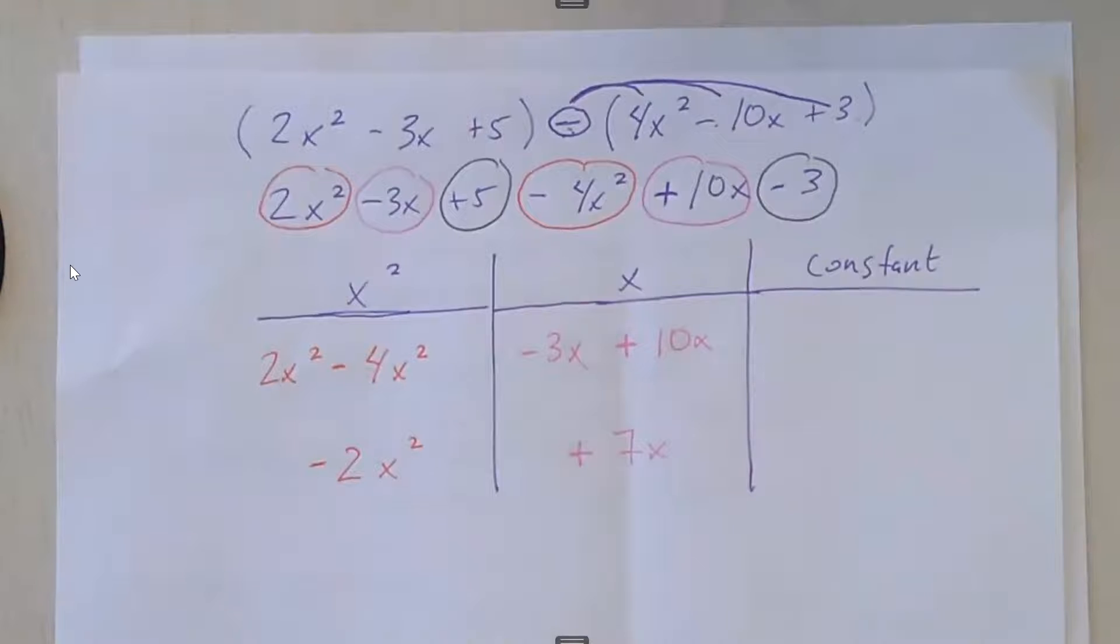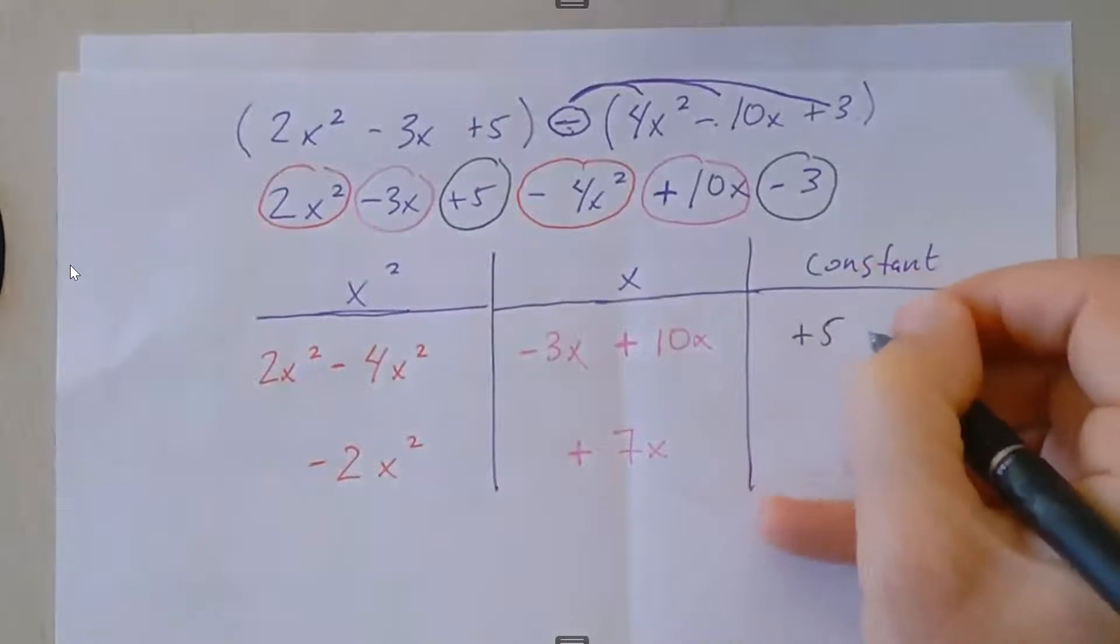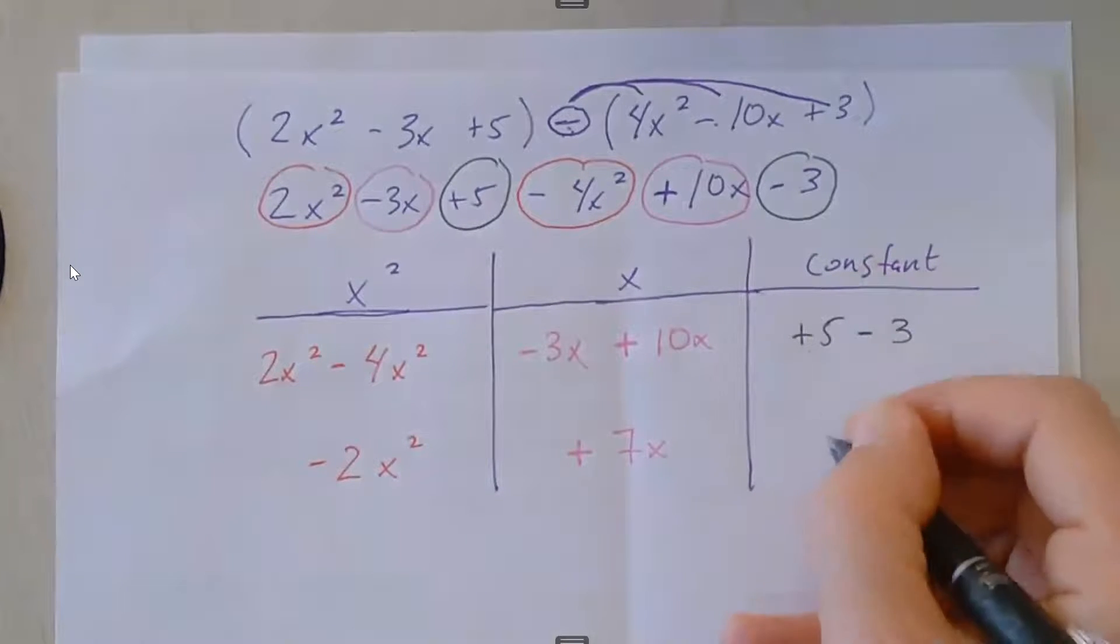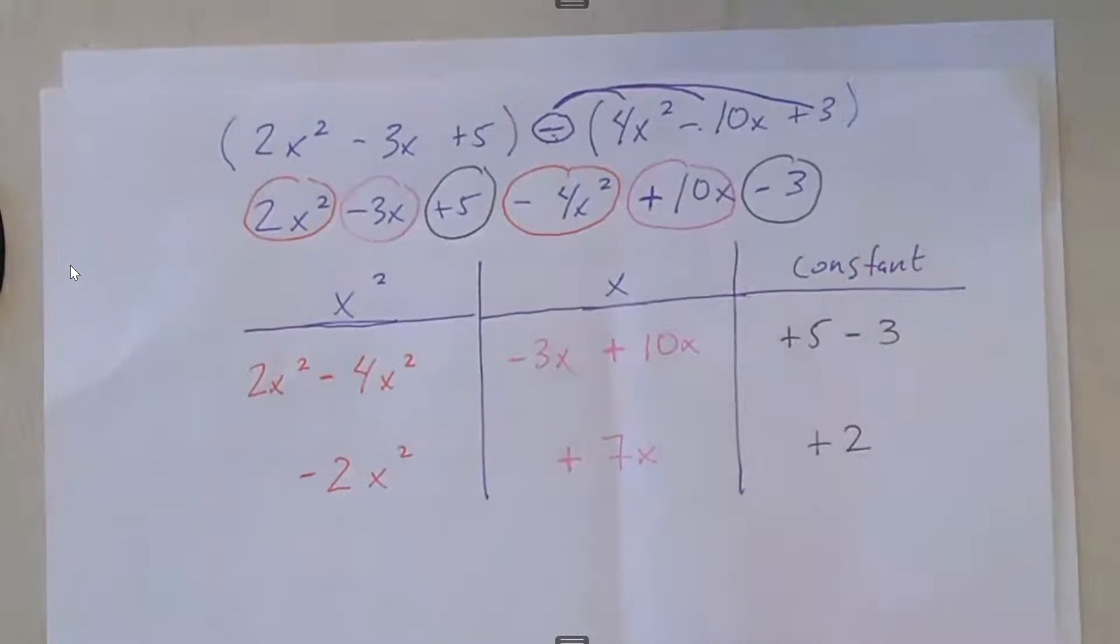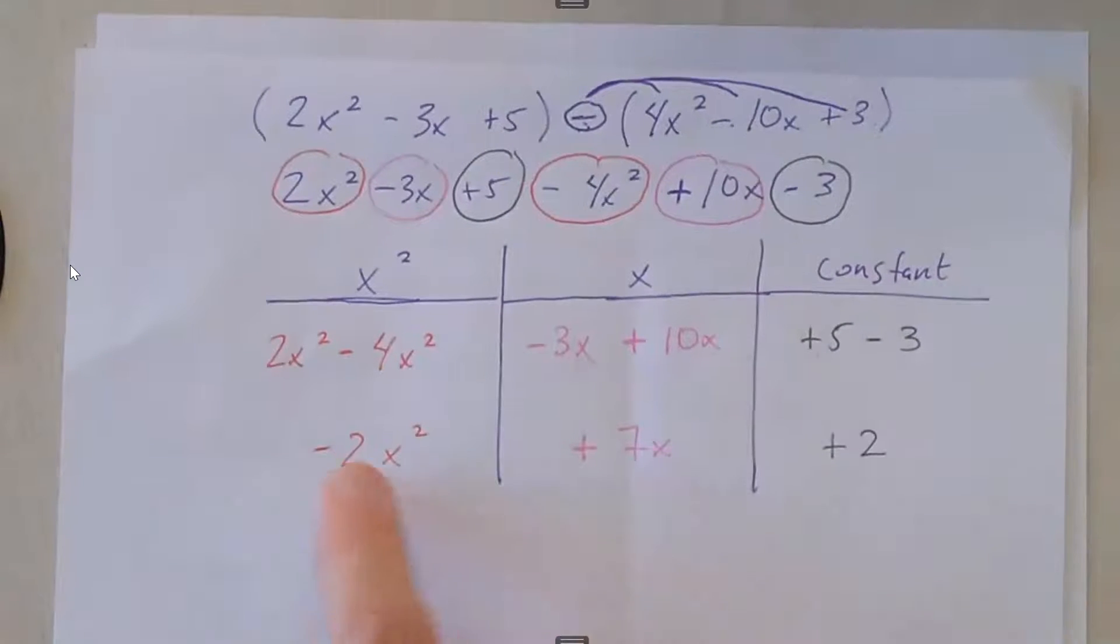Then finally, in black, we have our constant terms. It says plus 5 and then minus 3. So positive 5 minus 3 is positive 2. So my answer after I have combined like terms is negative 2x² + 7x + 2.